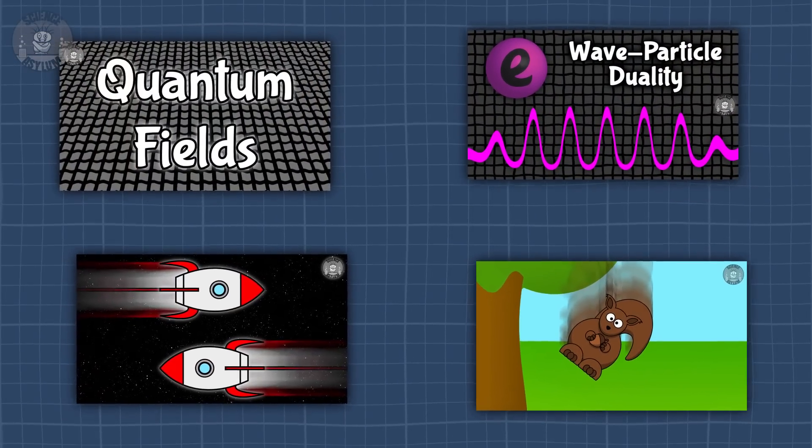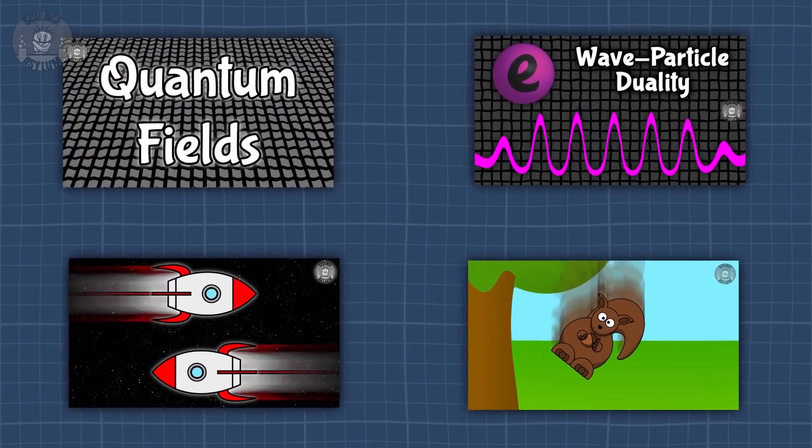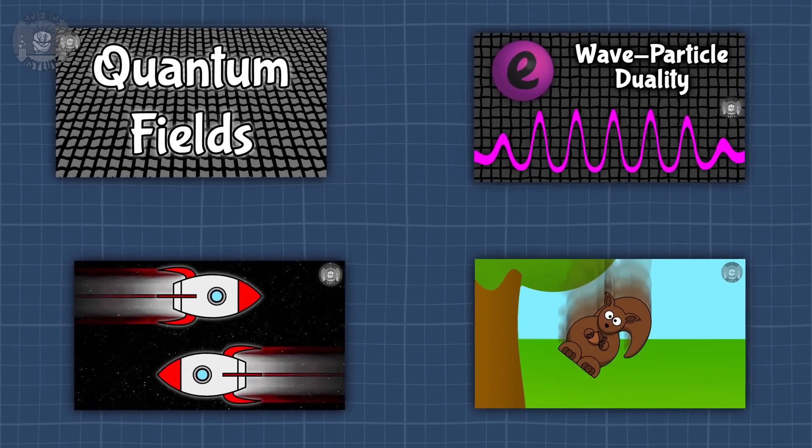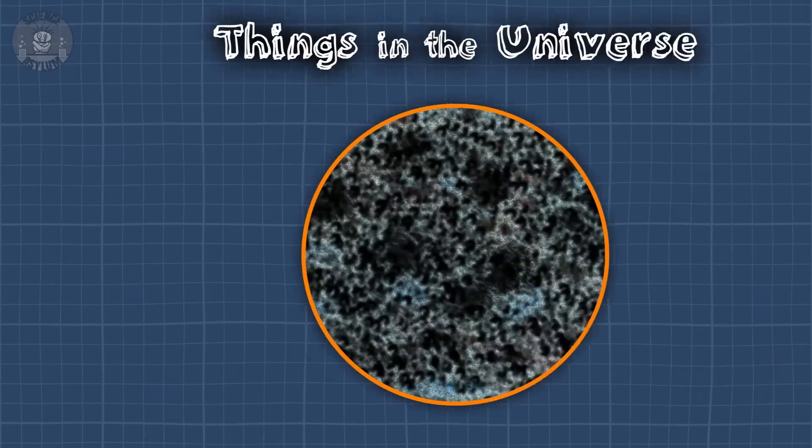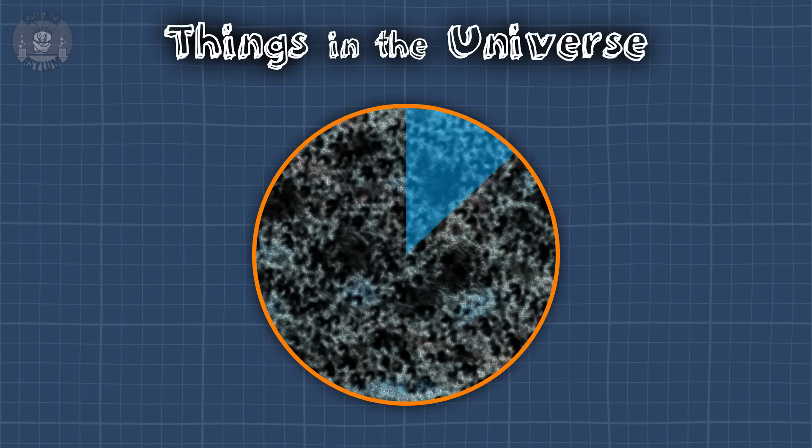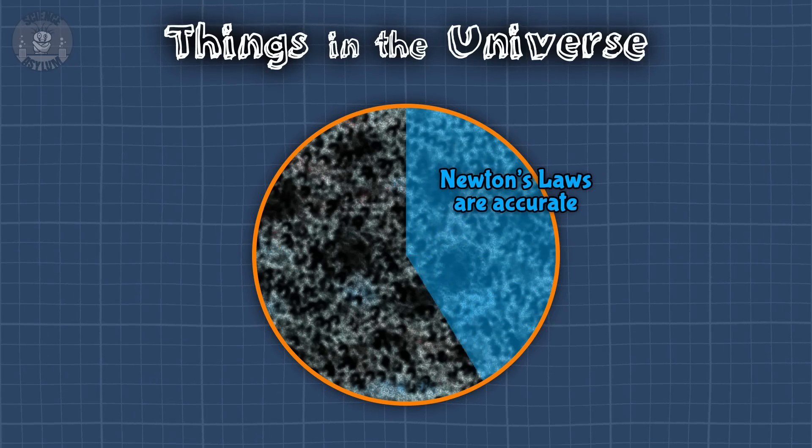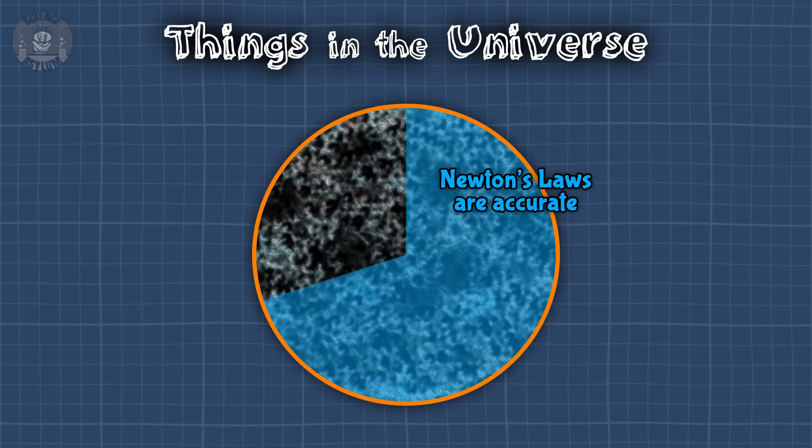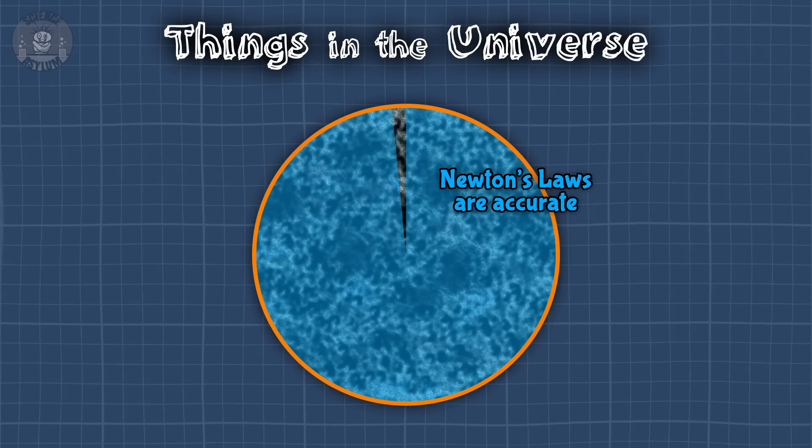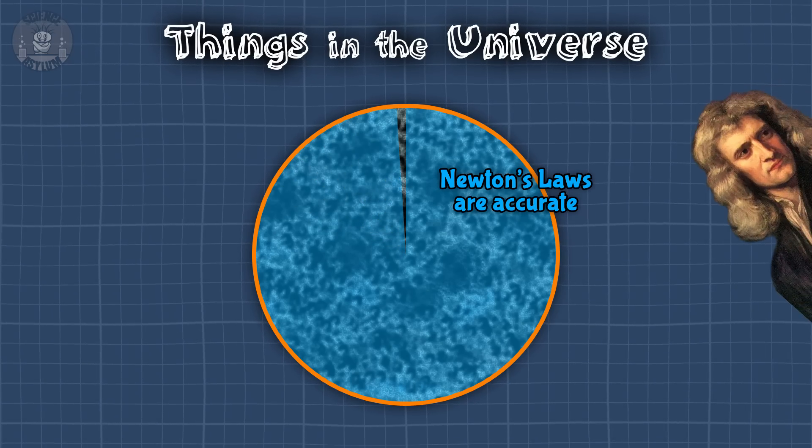We know from a lot of videos on this channel that Newtonian mechanics doesn't explain everything. It's not fundamentally correct. However, to be clear, Newton's laws are unbelievably accurate for 99% of the things and 99% of the universe. Most of the time, you're good with Newton.